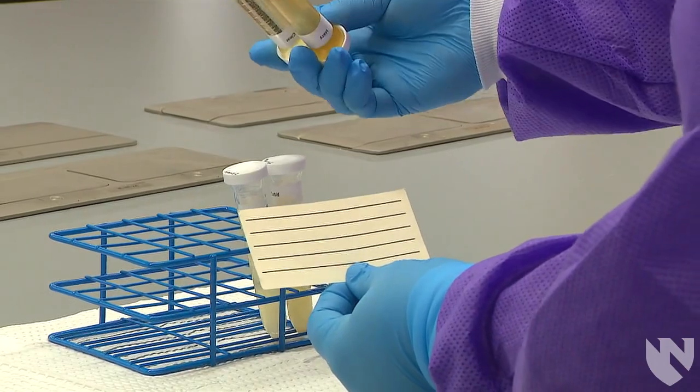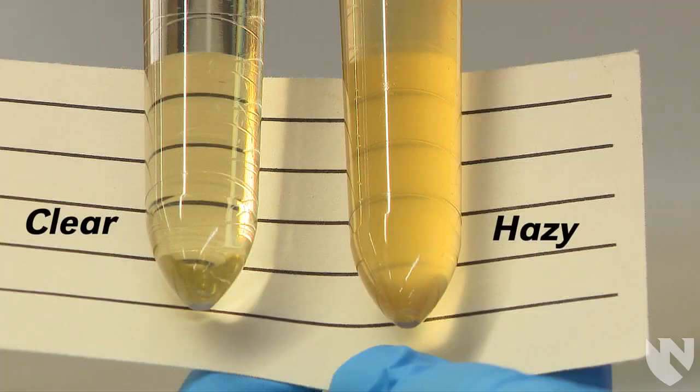Now let's compare the urines directly. First, here is a clear urine versus a hazy urine. Notice with the hazy urine, you can still see the lines but they are not as clear compared to the other urine.